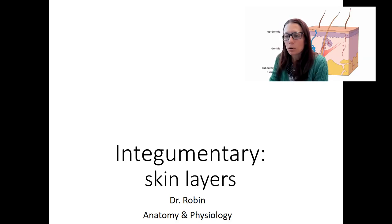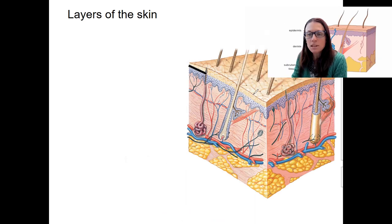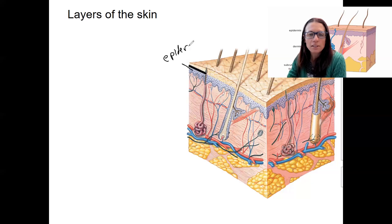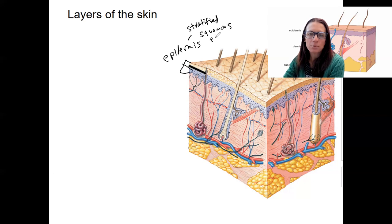In this video, I want to go through the layers of the skin overall and the various tissue types. In the next video, I will go into the epidermis in more detail. The first layer is the epidermis — the top layer. Remember, epithelial tissue faces the outside of the body, so this is an example of that. The epidermis is made up of stratified squamous epithelium, a special type I'll talk more about in the next video.